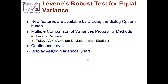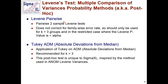For Bartlett's F-test pairwise, with no correction, limit it to only three groups and only when the Bartlett p-value is less than alpha; otherwise use F-test with Bonferroni correction, which multiplies the p-value by the number of pairwise comparisons to adjust for family-wise error rate. For Levine's test, we have Levine pairwise — which does not adjust for family-wise — and something unique: applying the Tukey test to the absolute deviations from the median (ADM), inspired by the Levine ANOM chart. This makes it very useful for follow-up multiple comparisons.